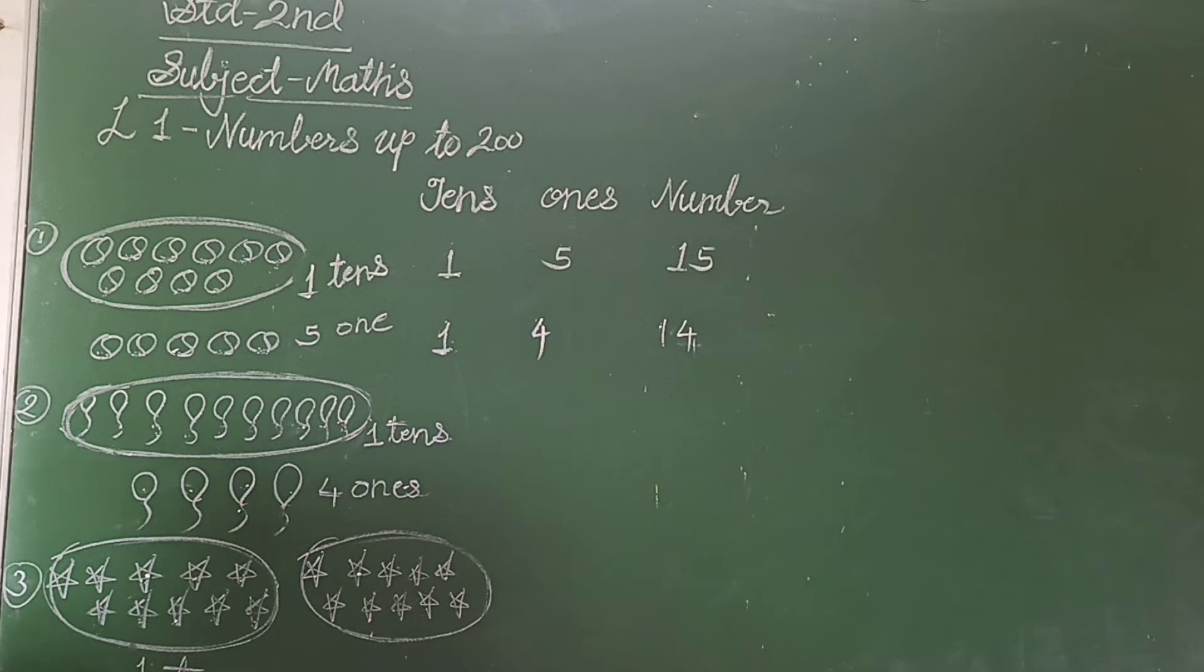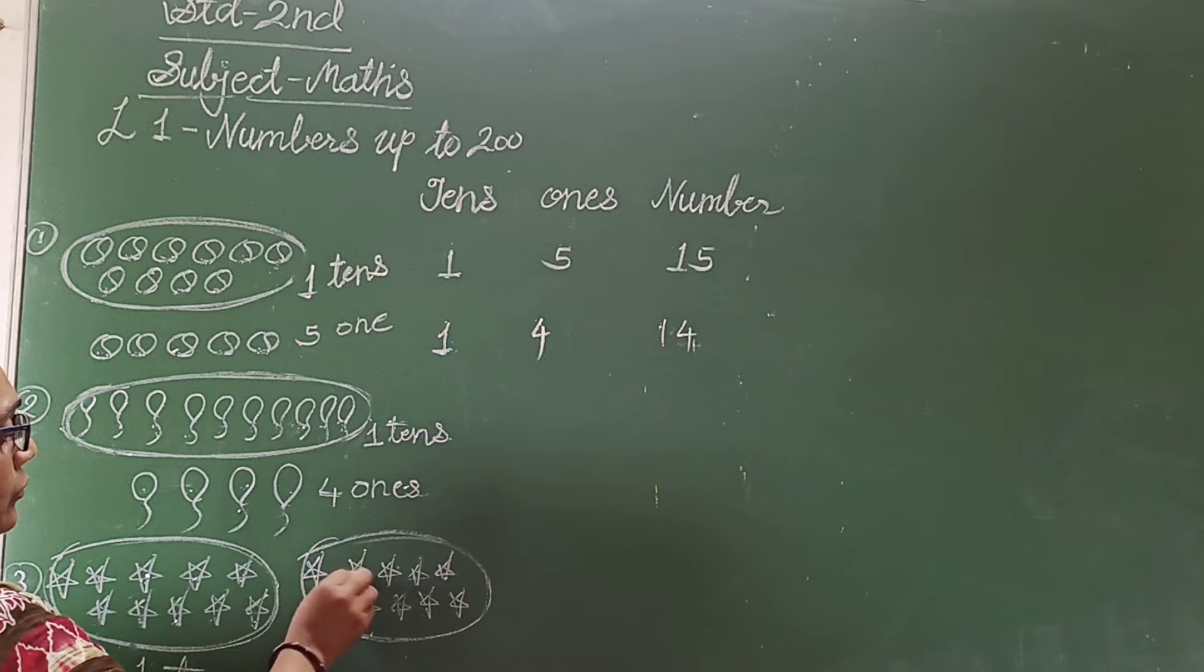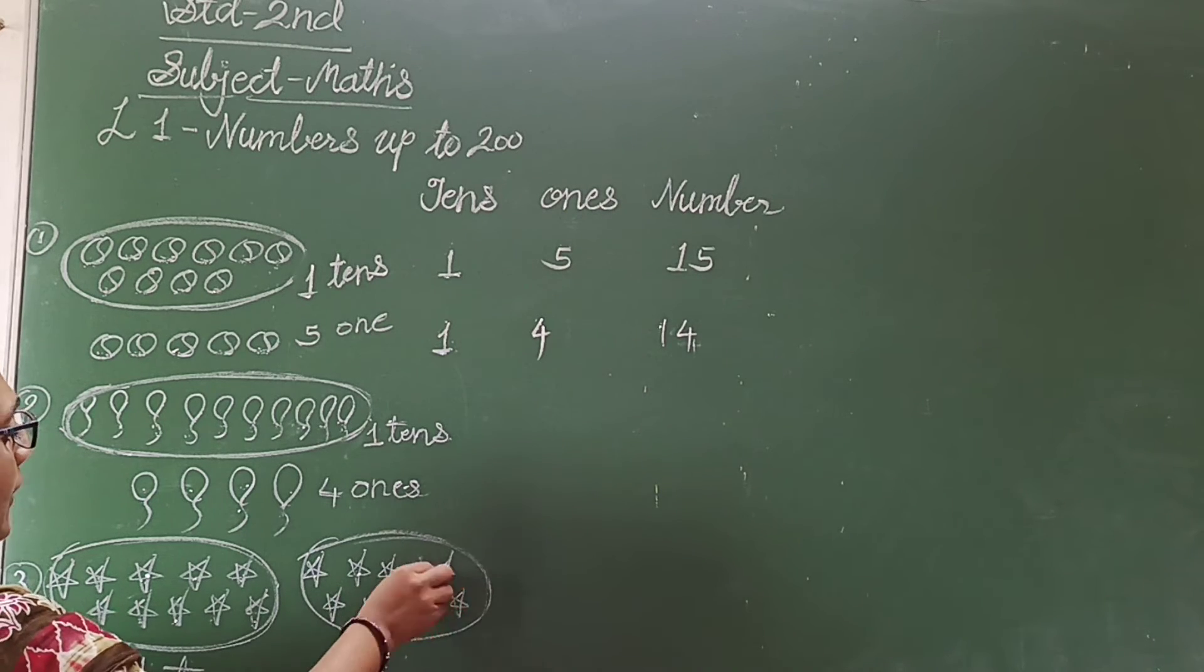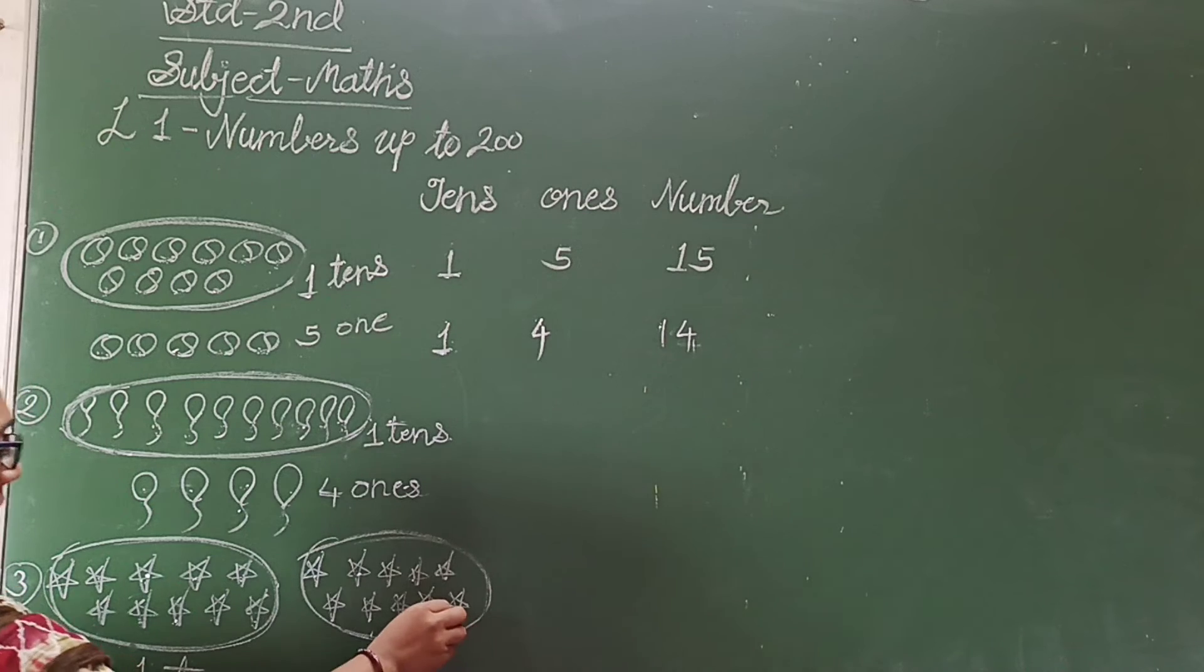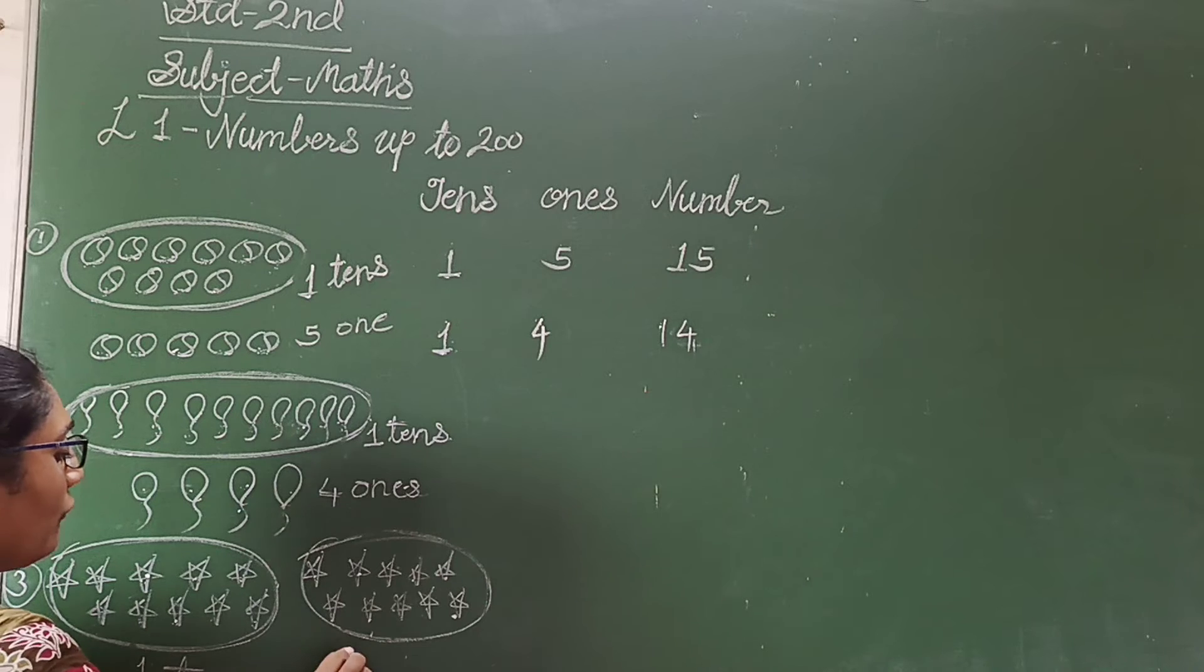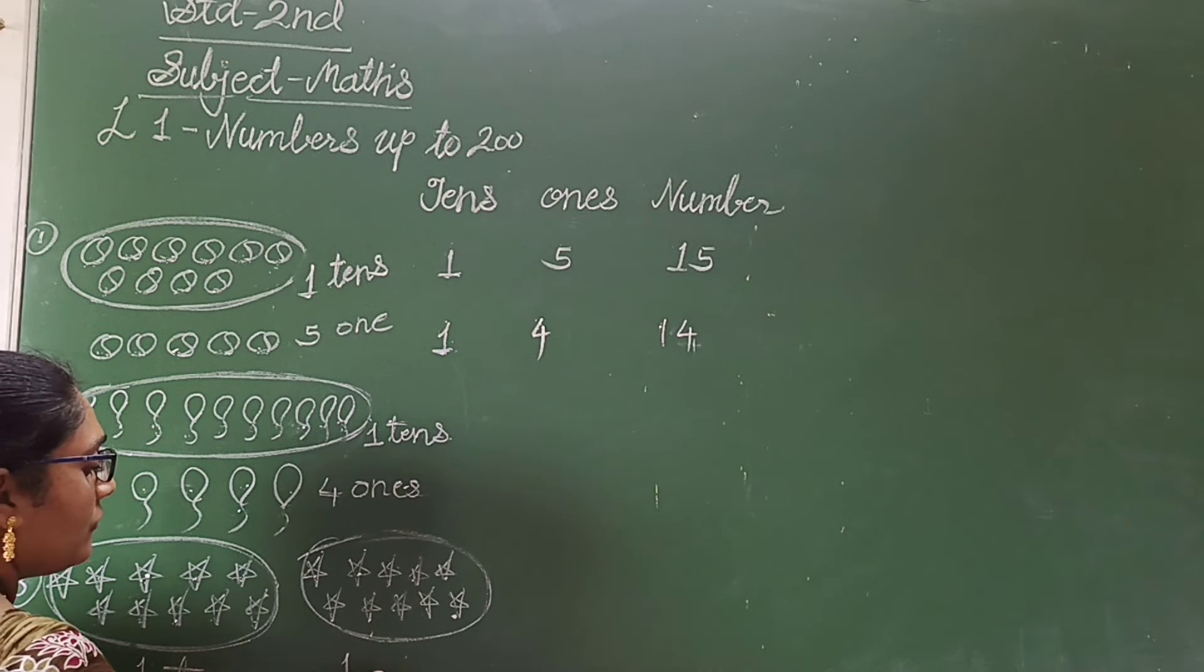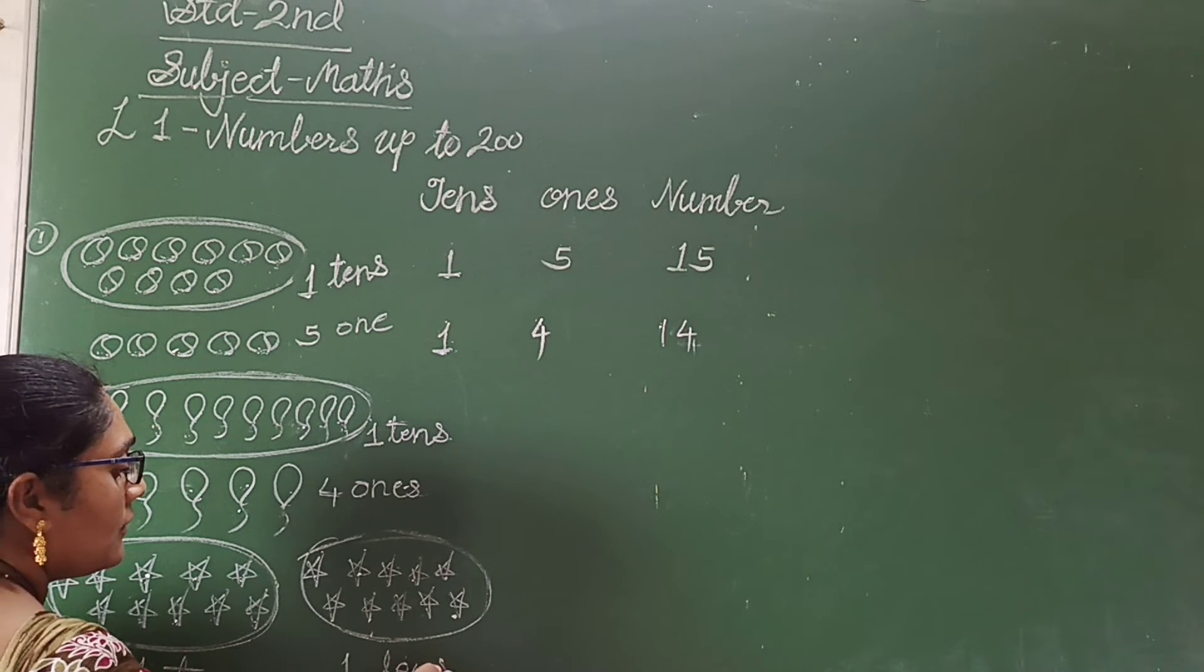And count again. 1, 2, 3, 4, 5, 6, 7, 8, 9, 10. Here also I have 10 stars. Means 1 bundle of 10 stars. Means 1, 10.